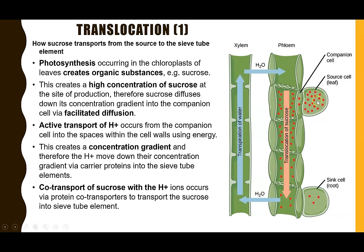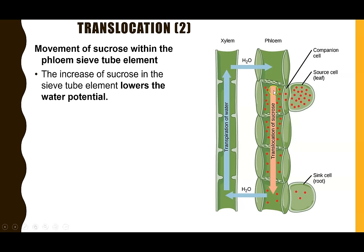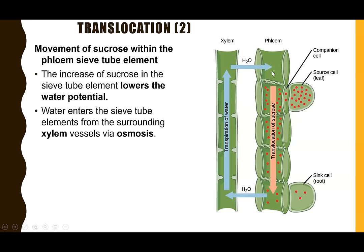Now that sucrose has moved into the sieve tube elements, we need to consider how it gets transported along them — this is the part linked to pressure changes. With lots of dissolved sucrose in the sieve tube elements, the water potential in this section of the phloem is lowered. The xylem lies directly next to the phloem, and as a result water moves into the sieve tube elements by osmosis, creating a very high volume and high hydrostatic pressure.